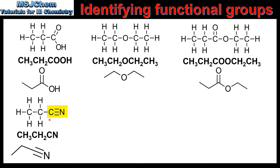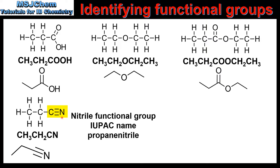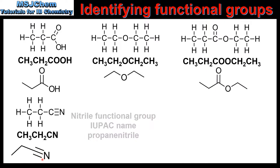In our next example we have a carbon atom with a triple covalent bond to a nitrogen atom, therefore this molecule contains a nitrile functional group. In the condensed structural formula a nitrile functional group is represented as CN, and in the skeletal formula we have a triple covalent bond and a nitrogen atom.